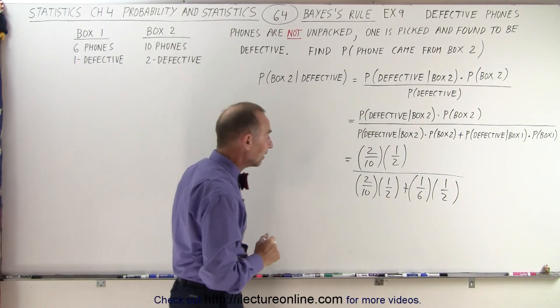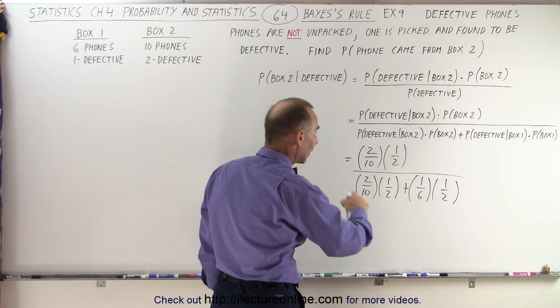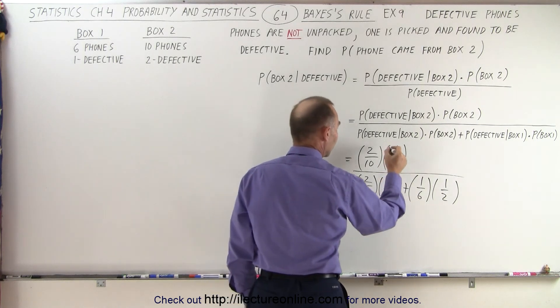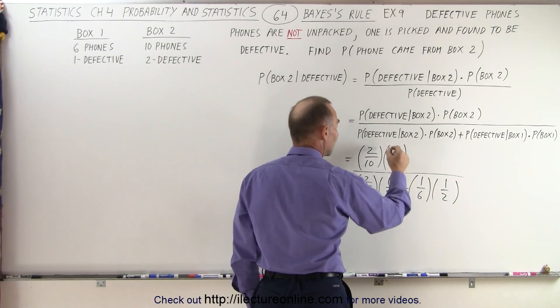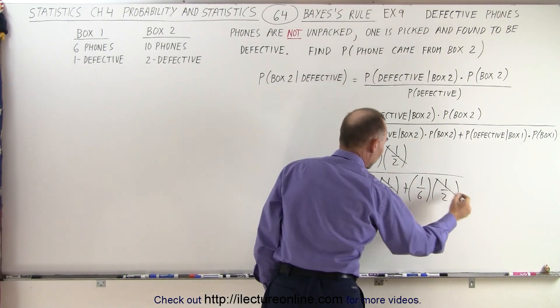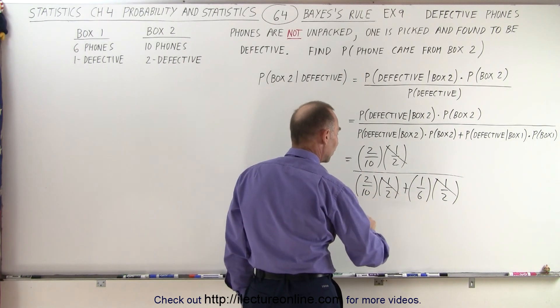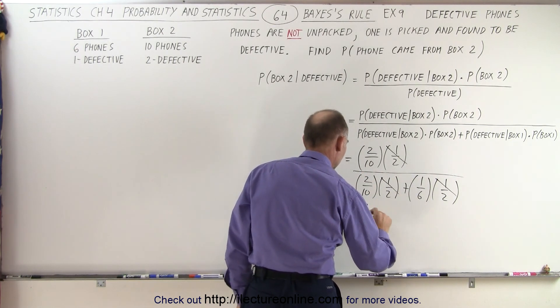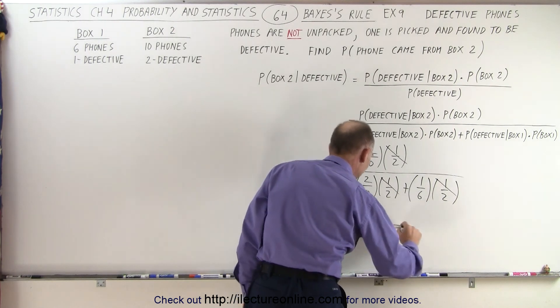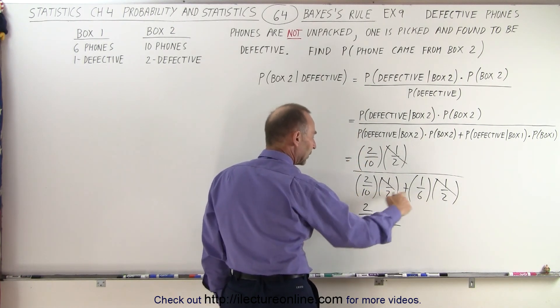Now let's go ahead and simplify that and see what we have. Notice the one halves cancel everywhere. So we can divide the numerator and denominator by one half, so that cancels out. And that leaves us with two tenths divided by two tenths plus one sixth.